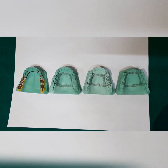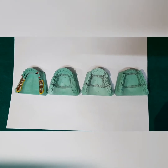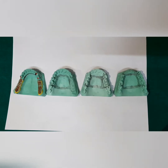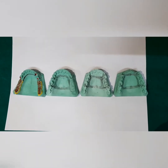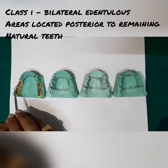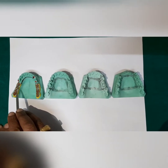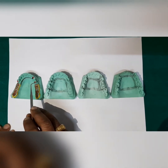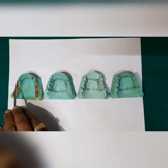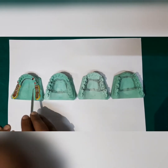Edentulous areas other than those determining the classification are referred to as modification spaces. Coming on to the classifications, first is Class 1. Class 1 is a bilateral edentulous space or area which is located posterior to the remaining natural teeth. So Class 1 is where you have bilateral missing spaces.